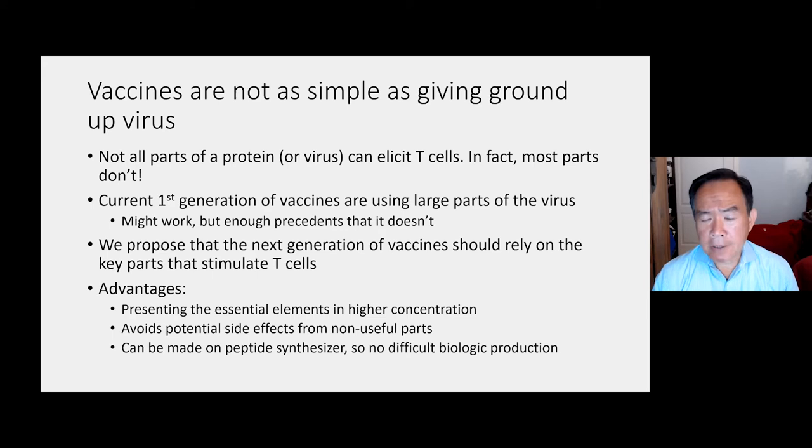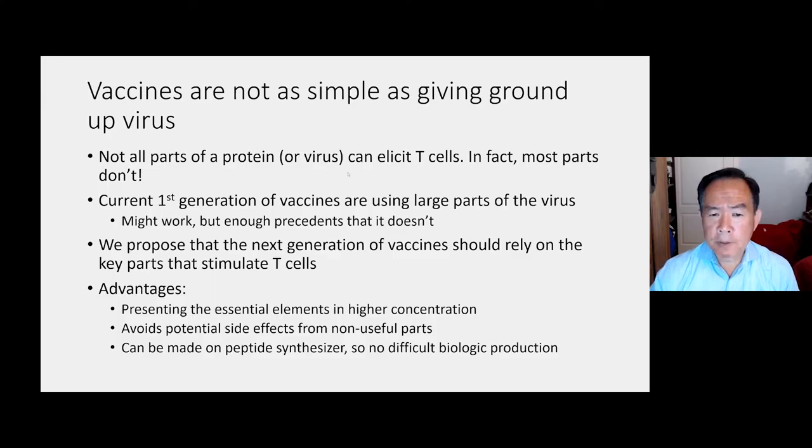Right now, we have a lot of vaccines in clinical trials. These were rushed into production. I certainly don't fault people for wanting to try to get something into production because we really need it. Now, those are using large parts of the virus. It might work. Unfortunately, there are precedents that for the coronaviruses, large parts don't necessarily work, that you actually have to hone down and get specific parts of the virus. So what we proposed in our work is that the next generation of vaccines should really focus on the key parts that stimulate T cells.